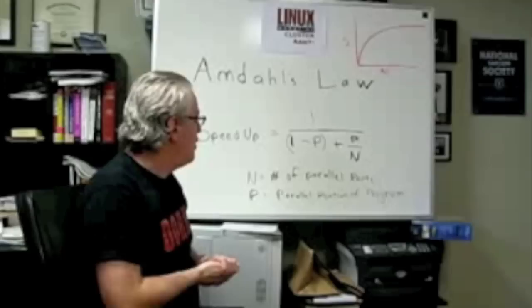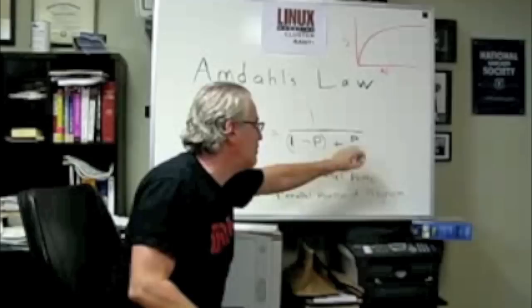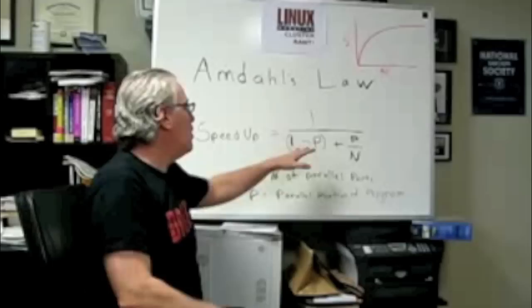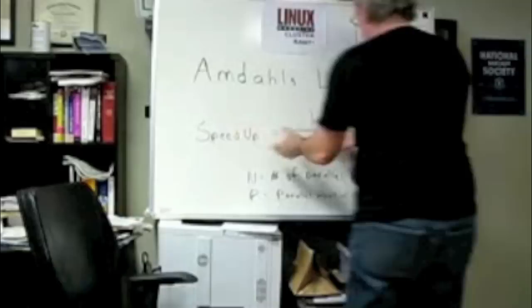Interesting thing. First, one minus p is essentially the sequential piece. So what it's saying is the sequential piece, one minus p, plus the parallel piece, if n is one, one processor, is just running the program on one processor. So that's one end of the law. What happens, however, is it tells us when we start making n bigger, and bigger, and bigger.